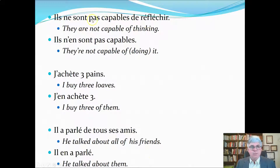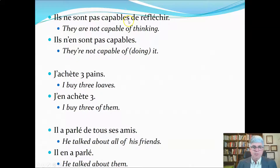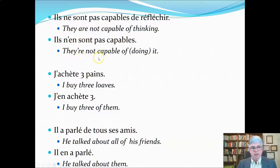'Ils ne sont pas capables de réfléchir' — they are not capable of thinking. If we want to replace 'de réfléchir' with a pronoun, we replace it with 'en' and put it in front of the verb: 'ils n'en sont pas capables.' The 'ne' and 'pas' go around the conjugated verb and the pronouns. This means they're not capable of it — not capable of thinking.